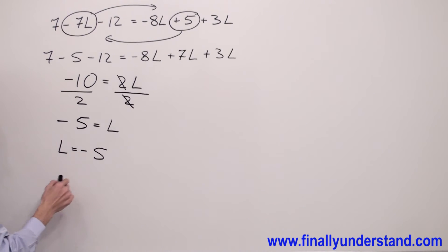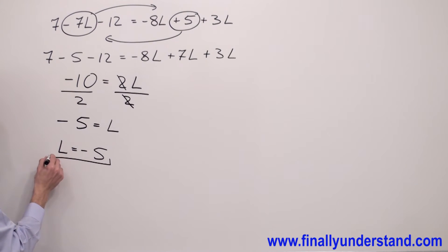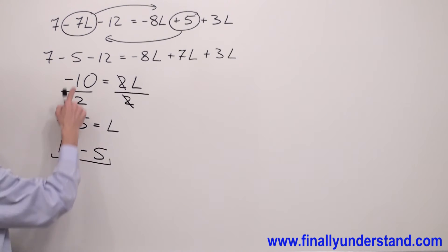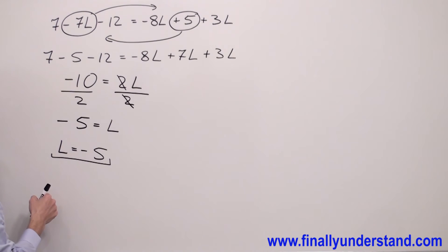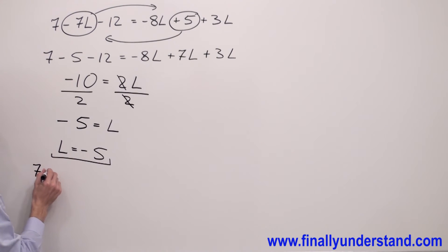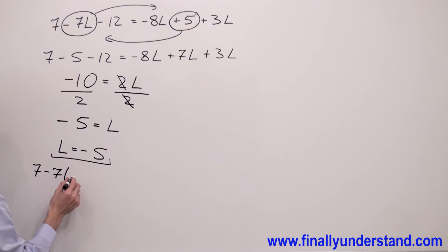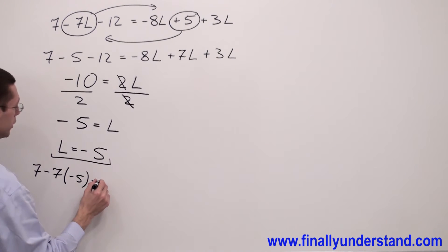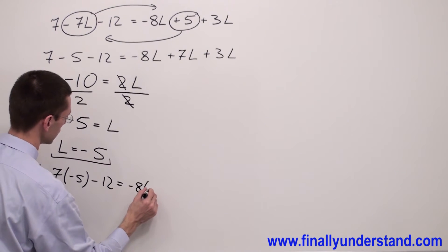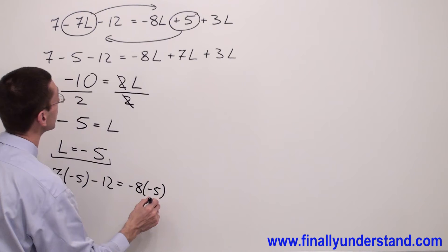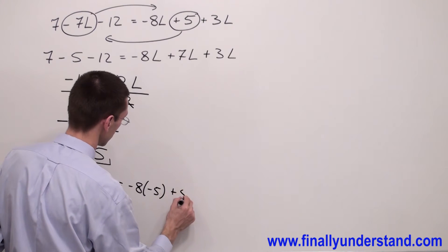Remember: any time you move everything from the right side to the left and everything from the left to the right, you don't change the signs. This is the answer to my problem. Let's verify if this is correct. To verify, we replace every single l in the original equation with negative 5. So I'm going to have 7 minus 7 times negative 5 minus 12 equals negative 8 times negative 5 plus 5.